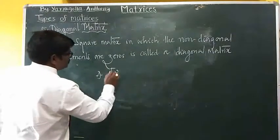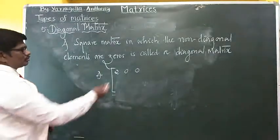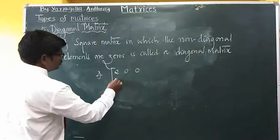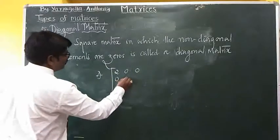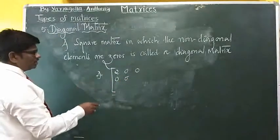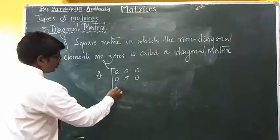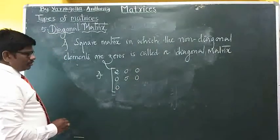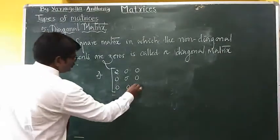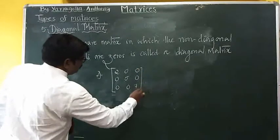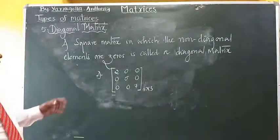For example, 2 is a diagonal element and the two non-diagonal elements must be zero. This is a non-diagonal element so it must be zero. I will take one more number here which is a diagonal element, and the non-diagonal elements are zero. So this type of matrix is called a diagonal matrix.